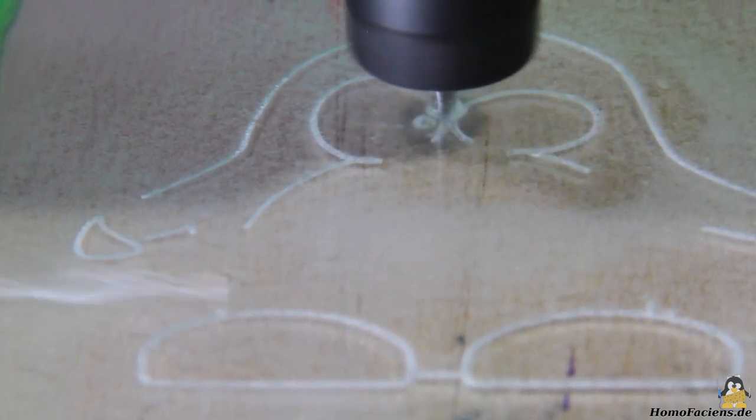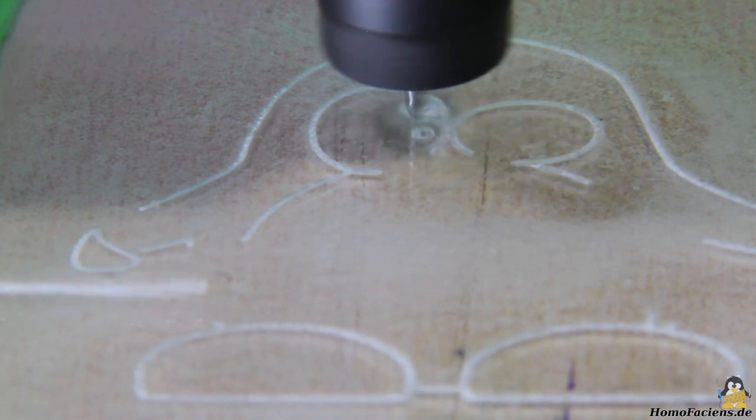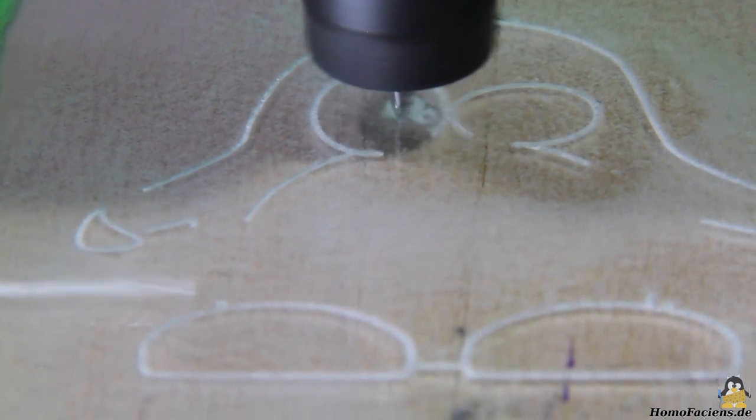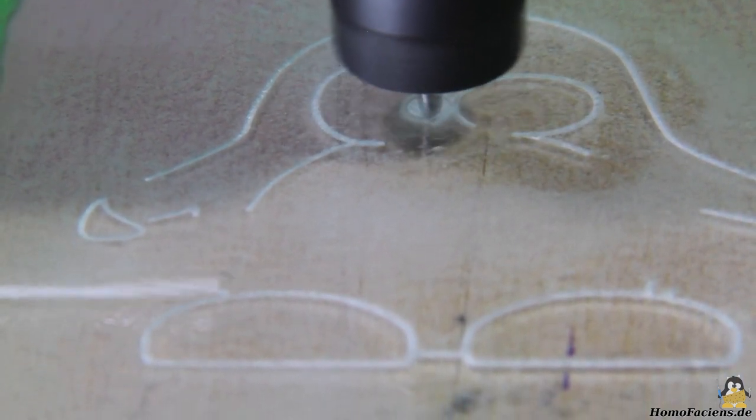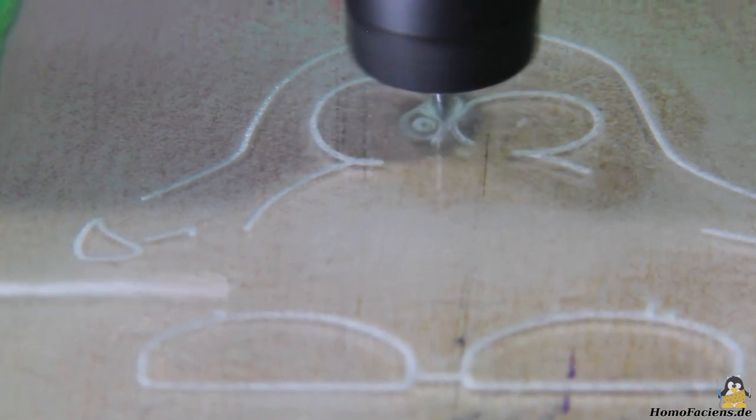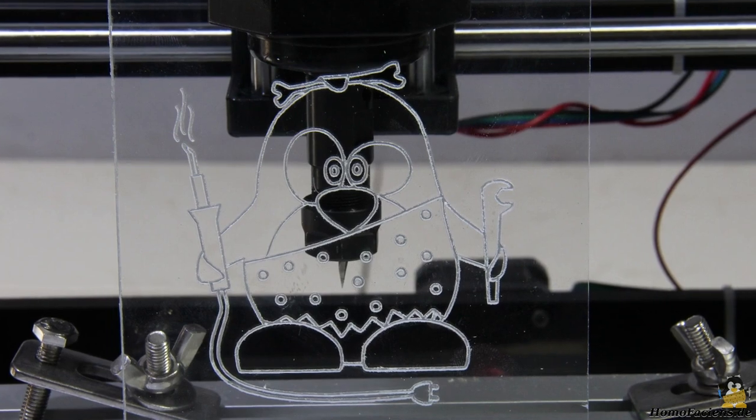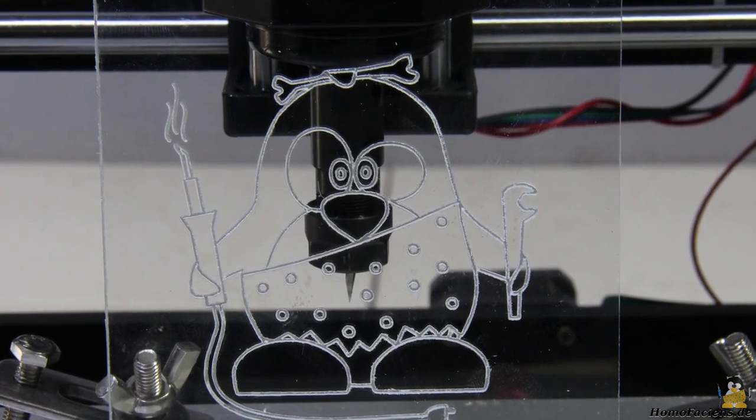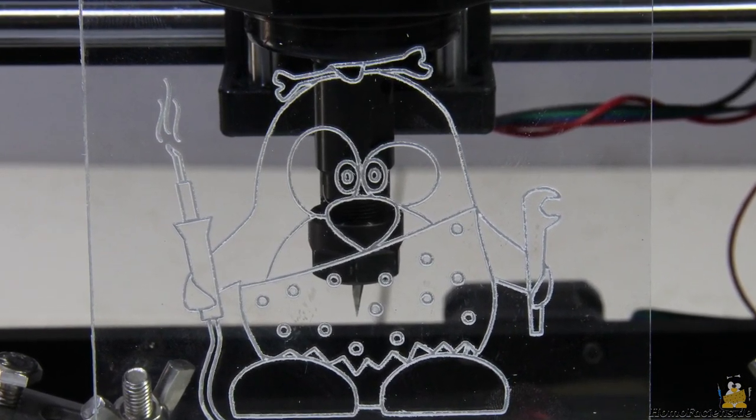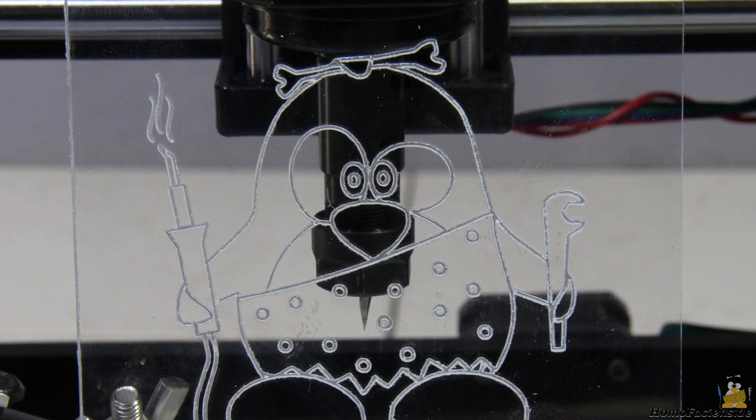The outlines of my mascot are engraved by the 3018 Pro with a total depth of 0.6mm. The engraving is done after about 20 minutes, I really like the result of this first quick test.